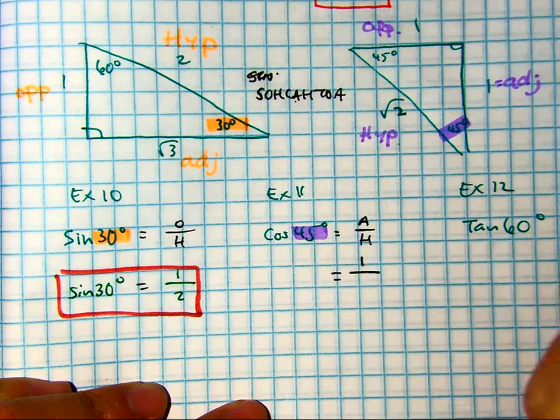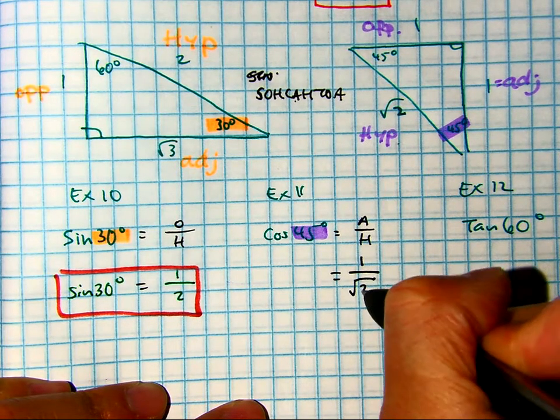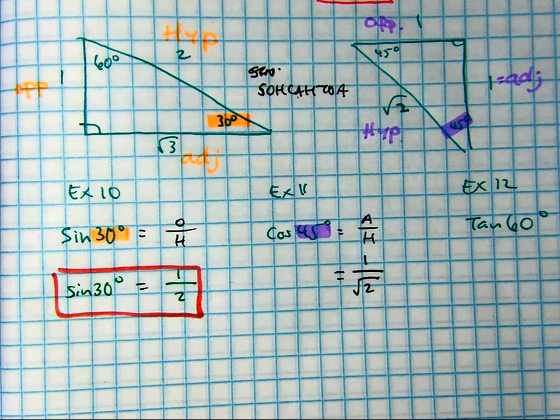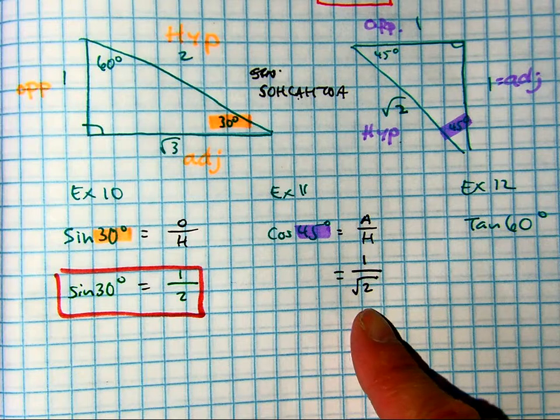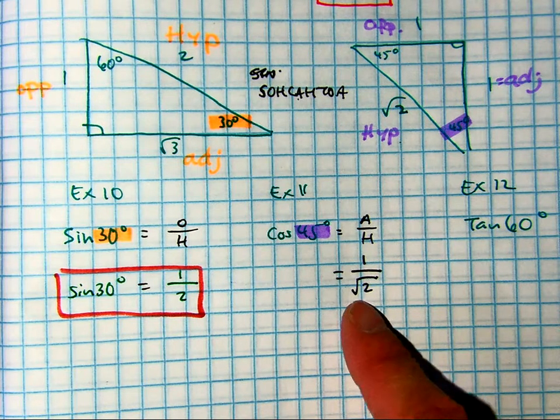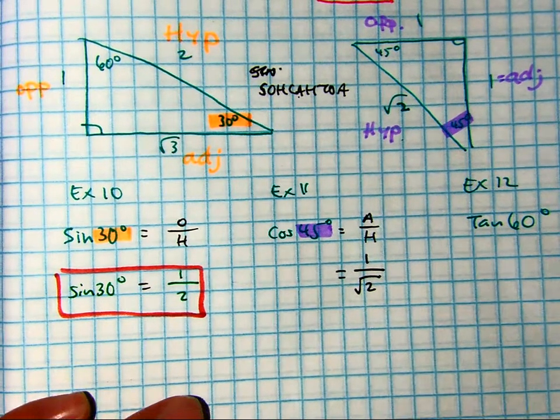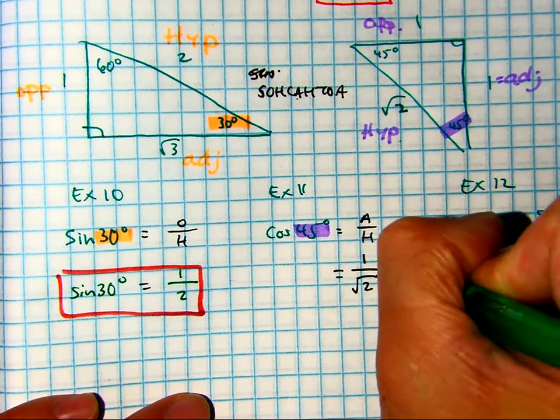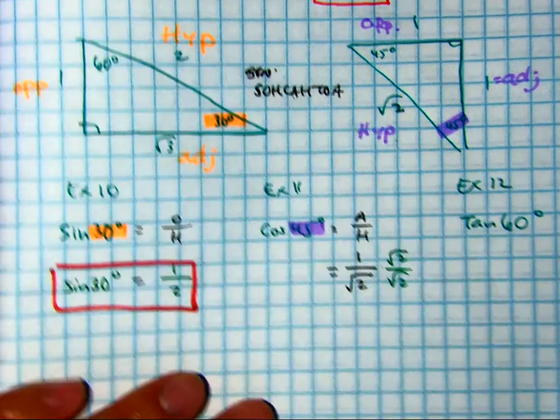A common mistake I've been hearing from students is here, to simplify, students are saying the reciprocal. The reciprocal is incorrect. Reciprocal means to flip the fraction. In this case, we're going to multiply by one. Everyone say multiply by one. Multiplying by one is rationalizing the denominator. It removes the radical from the denominator.